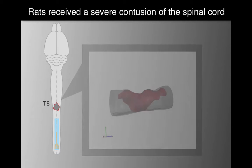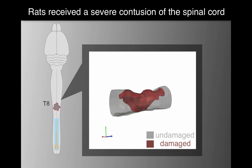The eDura was implanted over lumbar segments of adult rats. They received a severe contusion that spared less than 10% of spinal tissues.